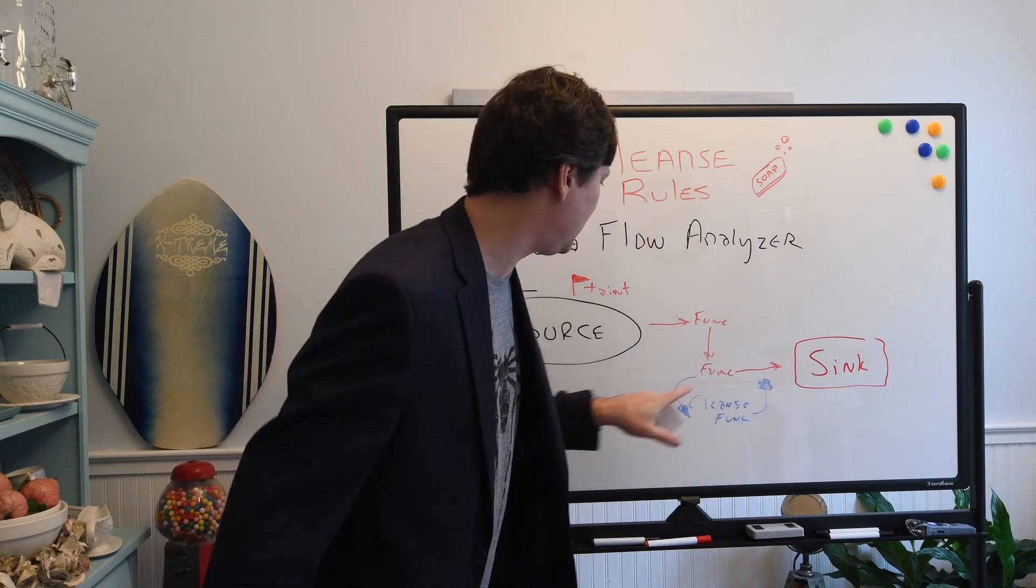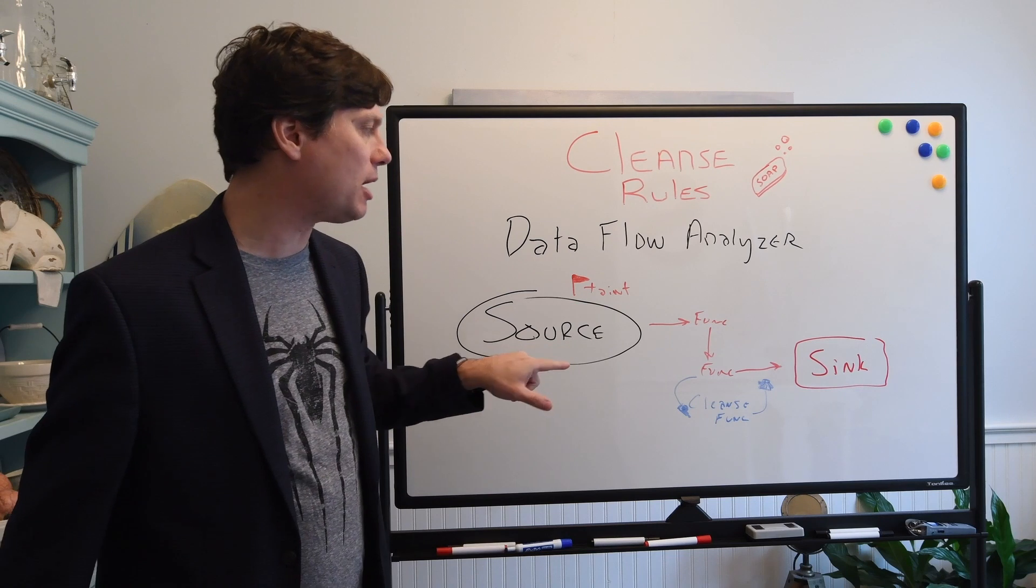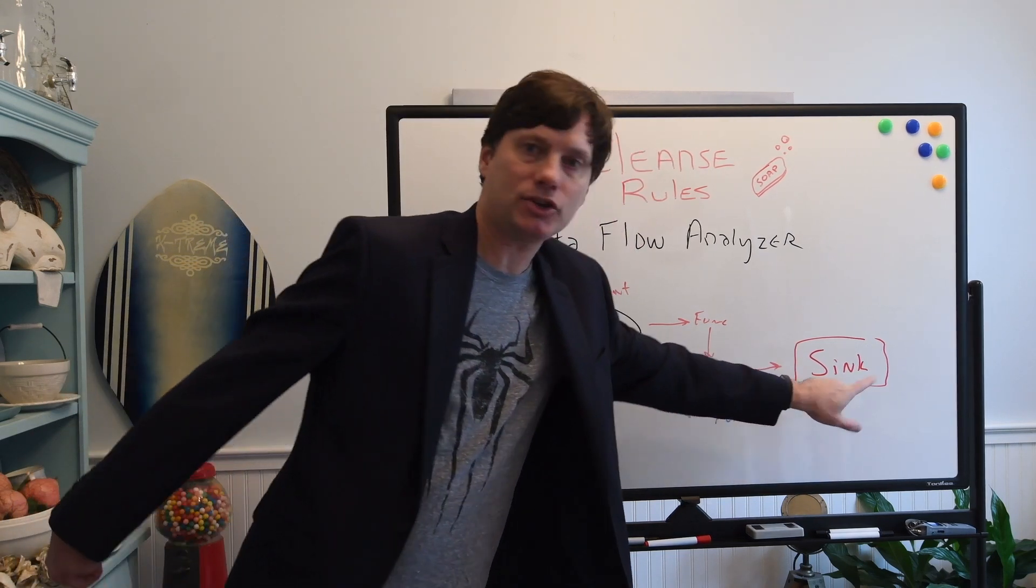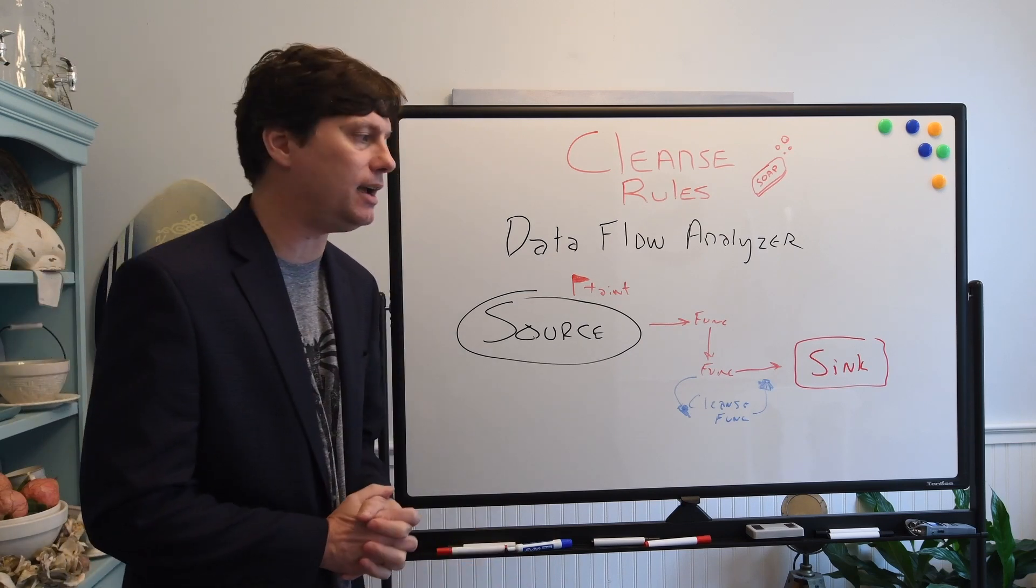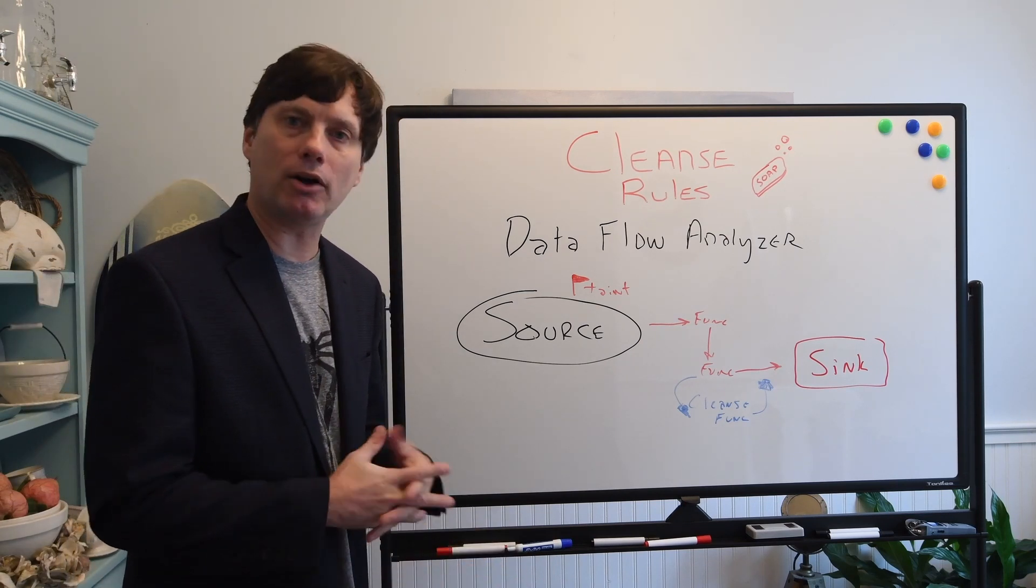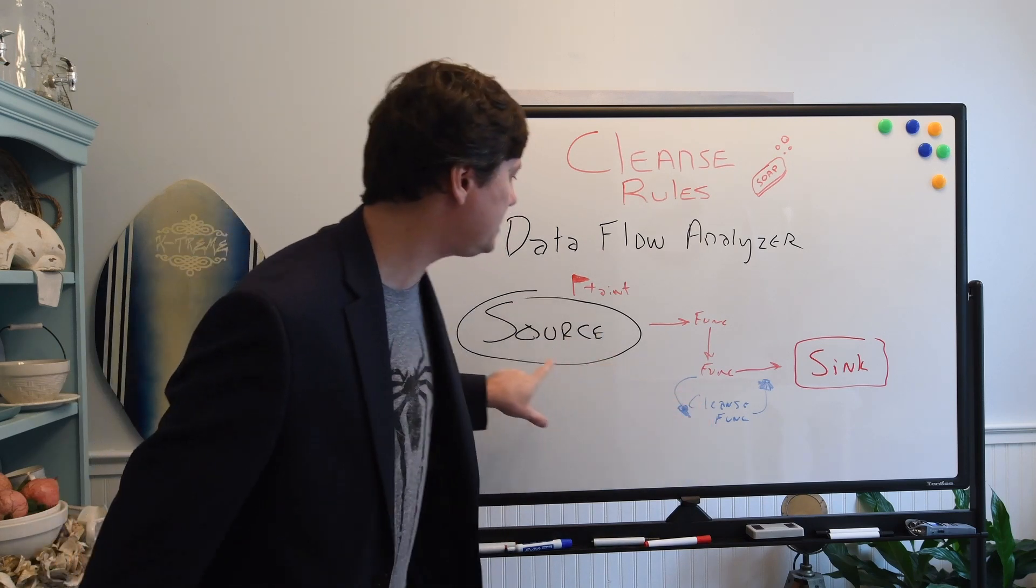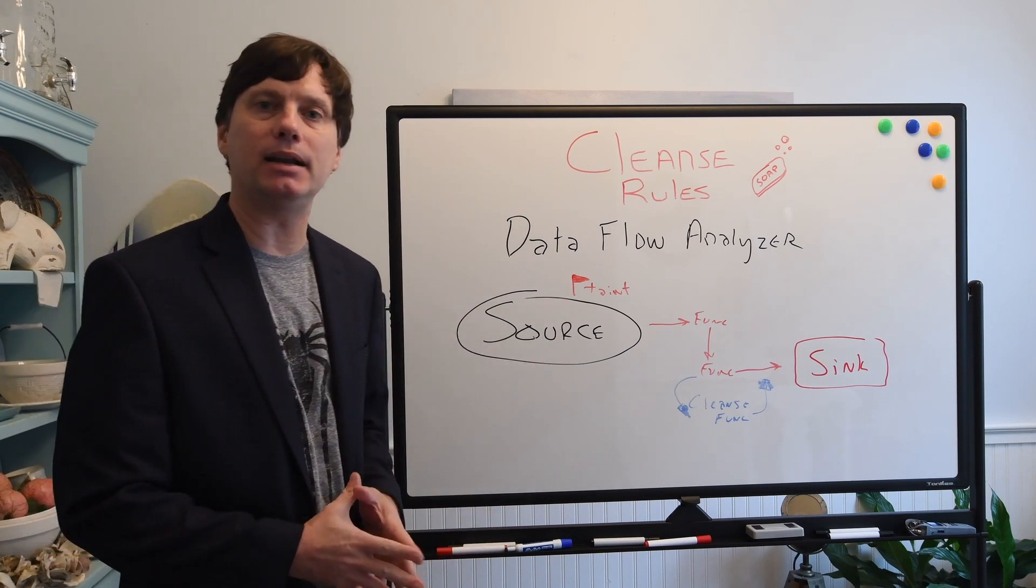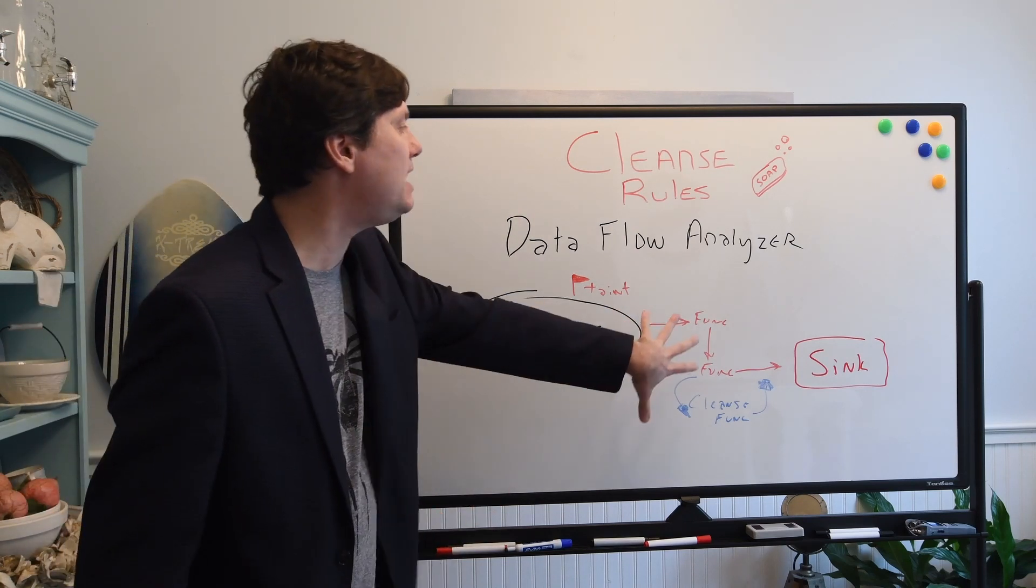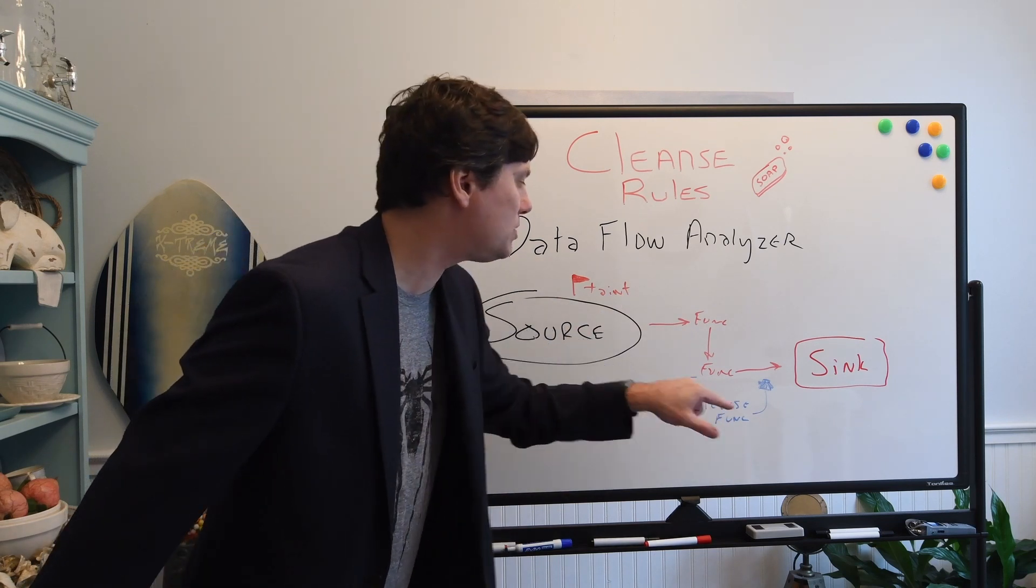The cleanse rule removes the taint flag from our source, so the vulnerability is not triggered on the sink, which means we won't see it in the portal at all. We won't see it in our reports. And if it existed at one point and we added the cleanse rule, it will mark it as fixed validated.